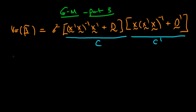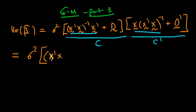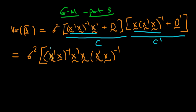So how do I simplify this whole thing? Well the idea is that I have to multiply it out, so if I multiply it out I just get sigma squared. The first term is going to be x primed x to the power minus 1, times x primed times x, times x primed x to the power minus 1. We note that this is actually some matrix A times its inverse times itself, and any matrix A inverted times itself is just the identity matrix. So these two things cancel and I'm just left with this last term, because the identity matrix times this last term is just this last term.